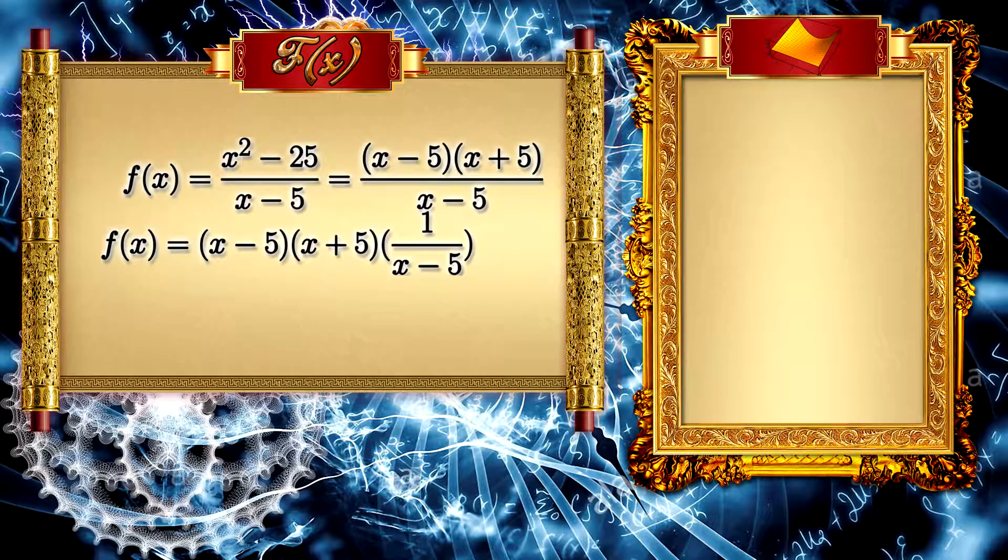Using the property of the square of difference, we can make x² - 25 be the product of two monomials: (x - 5)(x + 5).